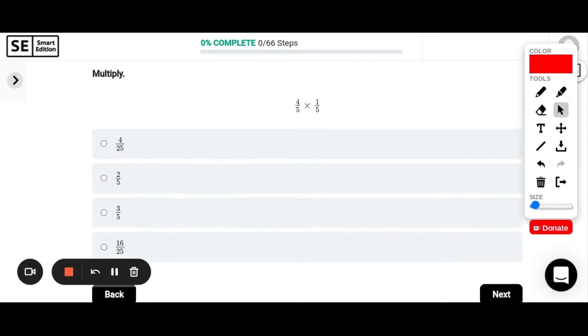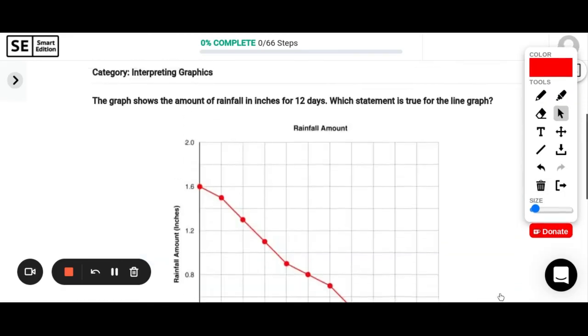Okay, multiplying fractions. So four fifths times one fifth. When we multiply fractions, all we have to do is multiply across the top and across the bottom. So four times one is four. Five times five is 25. 4 25ths. And we definitely want to check and see if there's any way we can simplify it. But in this case, four and 25 don't share any factors. So that is our final answer.